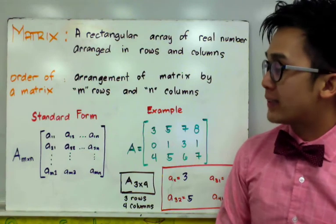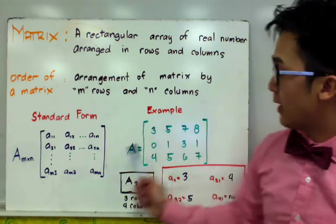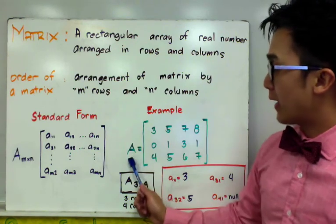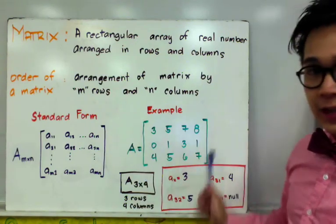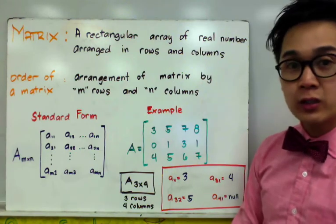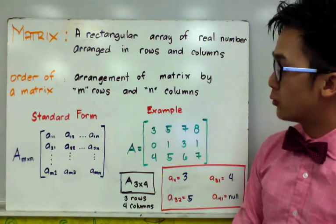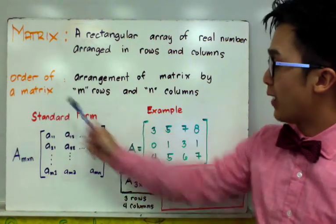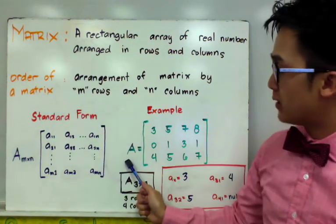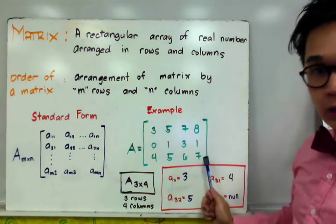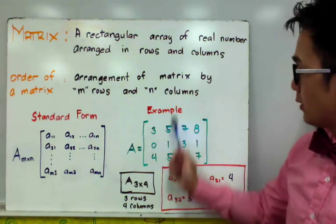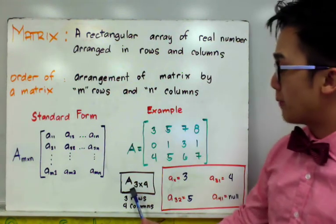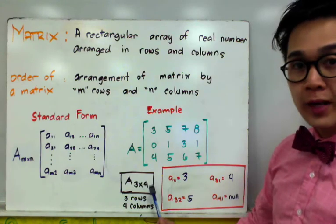To make sense of the standard form, consider matrix A as an example. The first thing to understand is the order of the matrix. For matrix A, we count 3 rows and 4 columns, so matrix A is a 3 by 4 matrix.